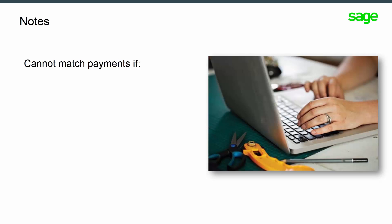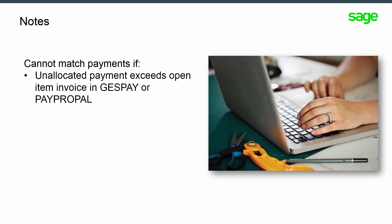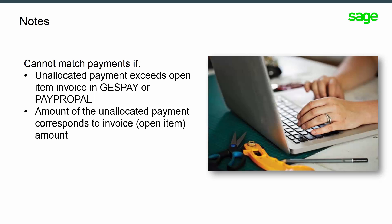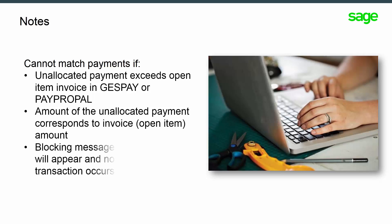Under the following circumstances, you will not be able to match an invoice to an unallocated payment in GES PAY or PAY PRO PAL: when the amount of the unallocated payment exceeds the open item invoice, or when the amount corresponds to the invoice open item amount. In this case, matching must be done in the manual or automatic functions. If the transaction cannot be completed, you will receive an error message saying NULL AMOUNT. It will appear in GES PAY and there will be no match between payment and invoice.